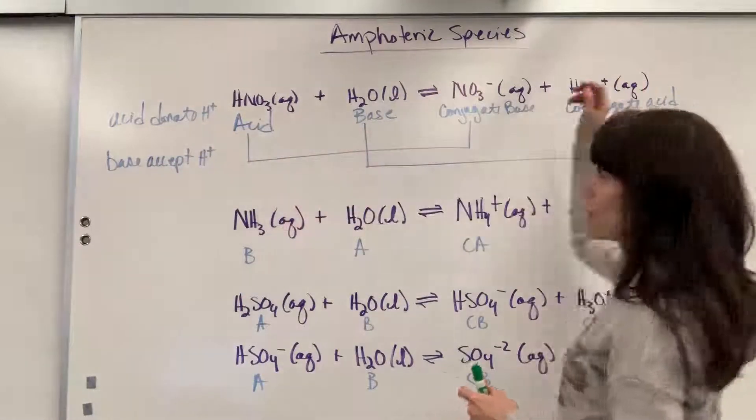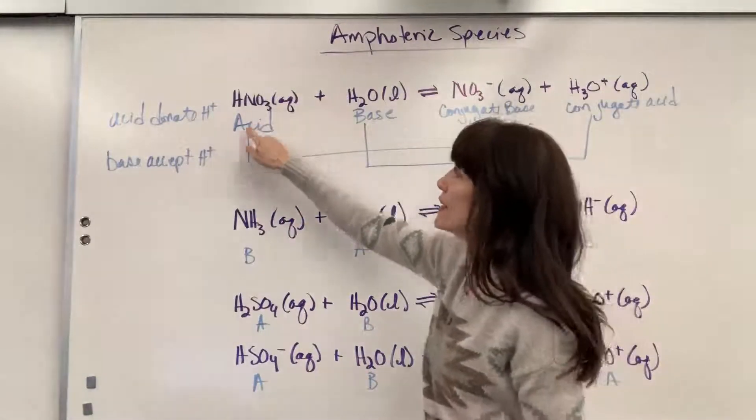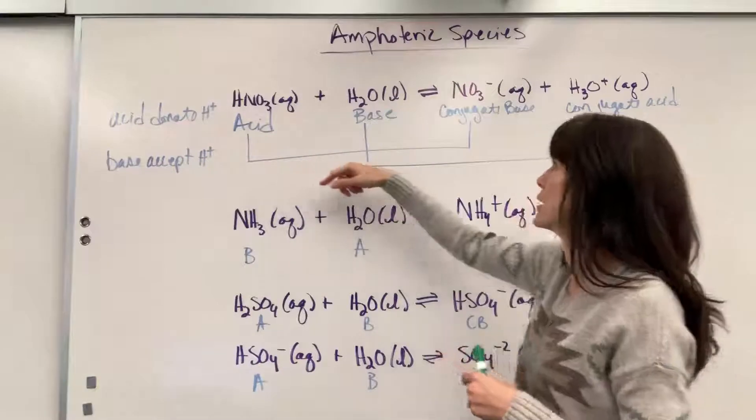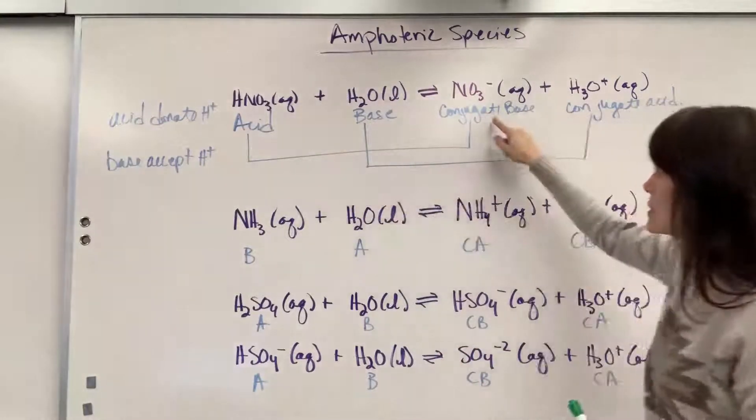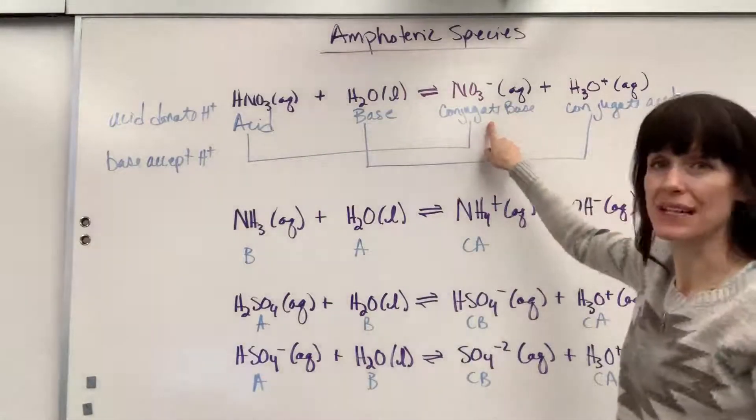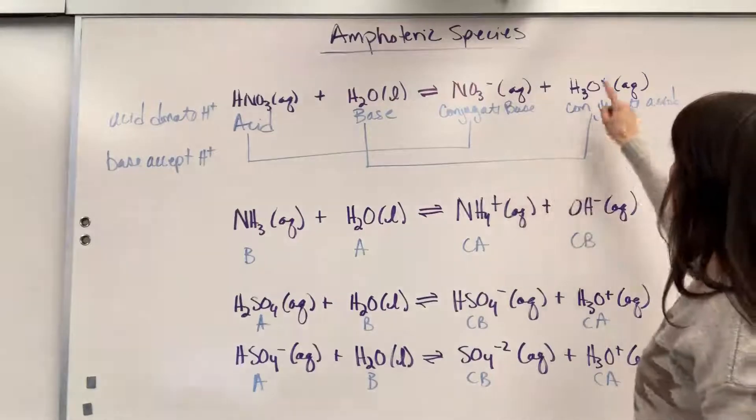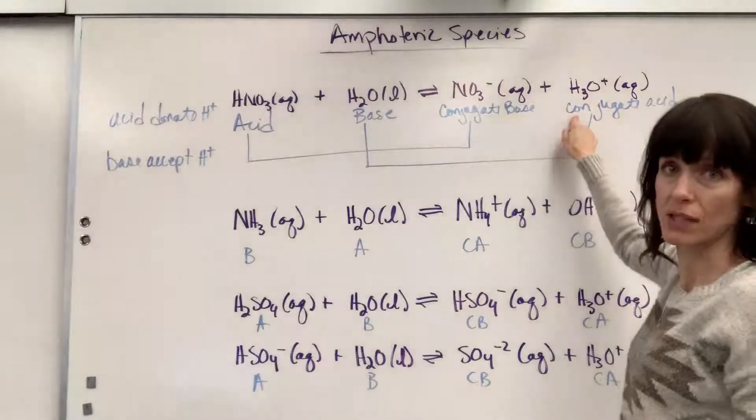So I wrote my example in this first equation up here. The nitric acid is going to donate the hydrogen, water is the base, is going to accept the hydrogen. So when you come over here, you can see, sure enough, nitric acid lost that hydrogen, becomes nitrate. That's the conjugate base, and the water accepted the hydrogen, so that becomes a conjugate acid.